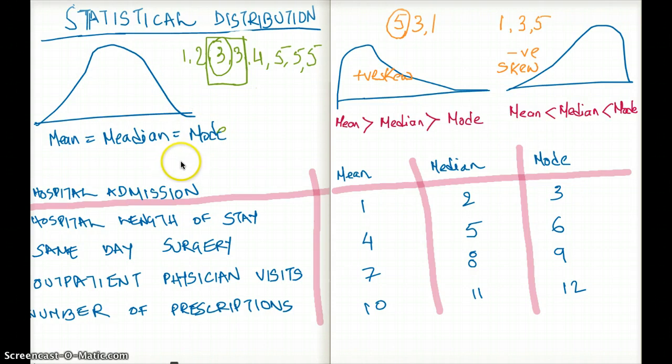Before we go to positive and negative skew, let's quickly talk about what exactly is mean, median, and mode. Mean is easy. That's the average. You take all the numbers that you have and you add them together, then divide by the count. So in this case you add 1 plus 2 plus 3 plus 3 plus 4 plus 5 plus 5 plus 5 and divide it by 8 because there are 8 numbers here. That would be your mean, your average.